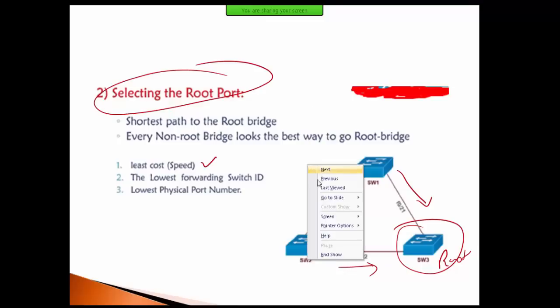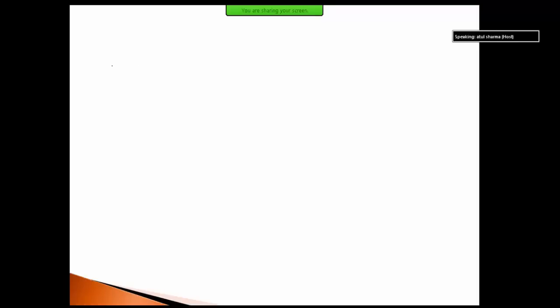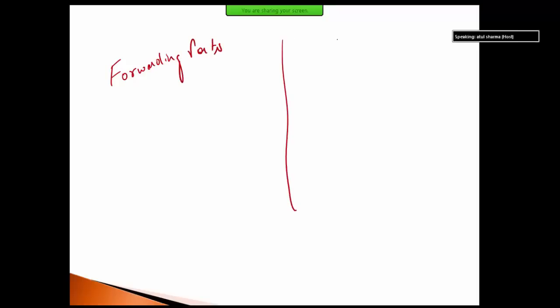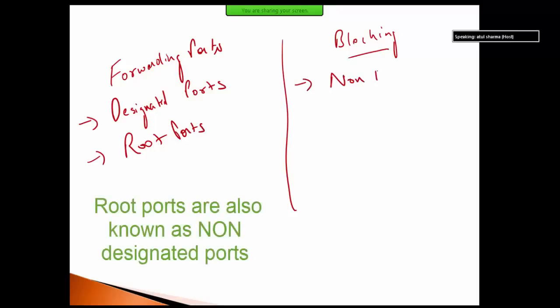Selecting the root port: there are two types of ports. When you come to the network, you have forwarding ports and blocking ports. Forwarding, which means the connection forwards data — shown in green. Blocking ports are shown in red. Forwarding ports are designated ports, and there are also root ports. Blocking ports are non-forwarding ports.